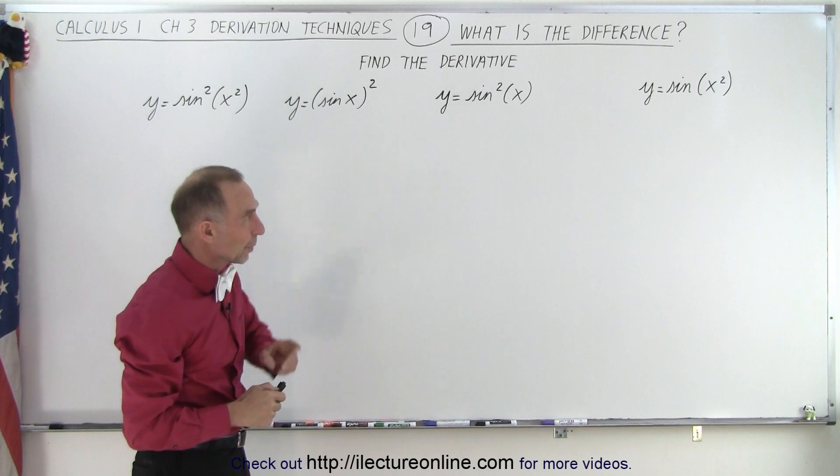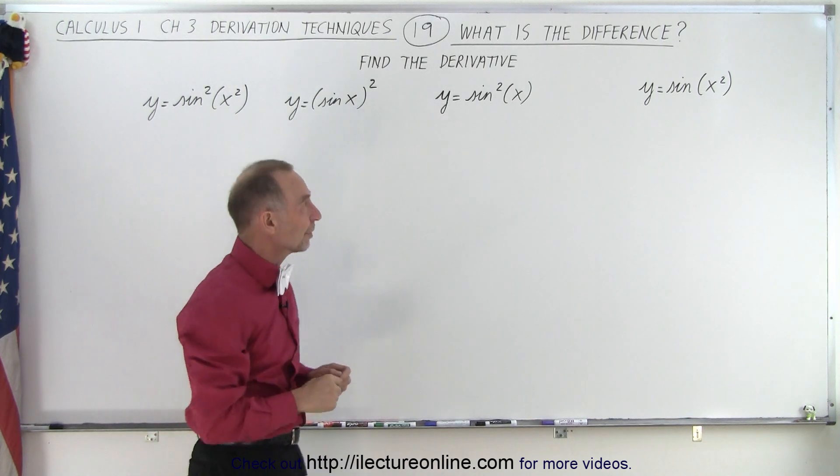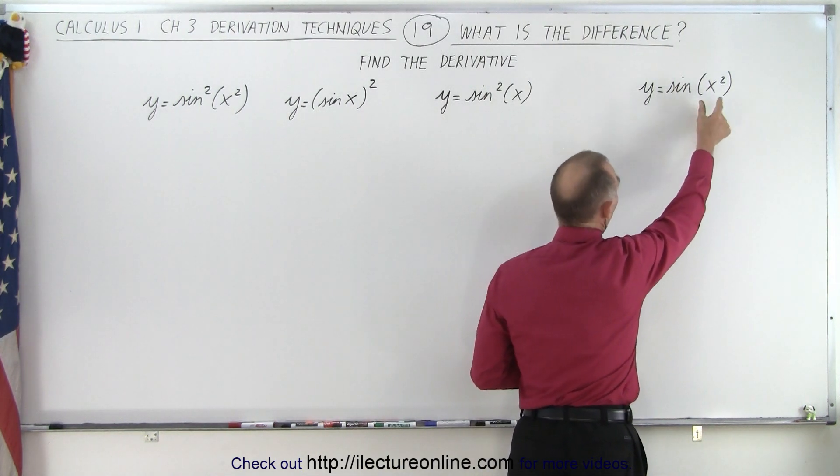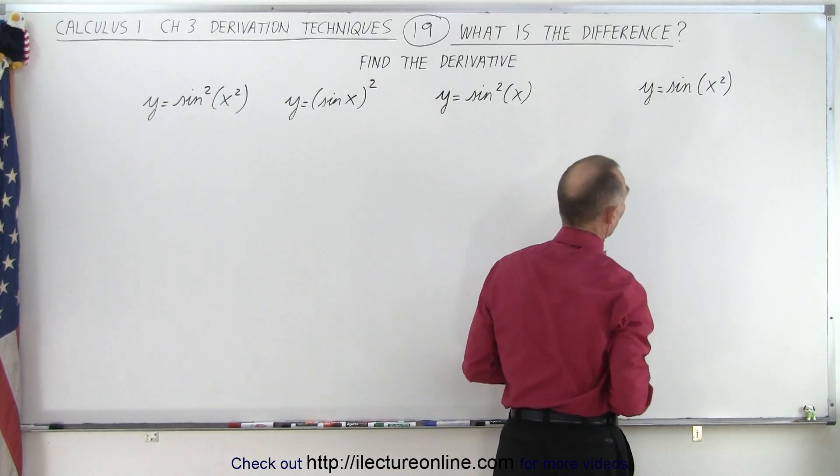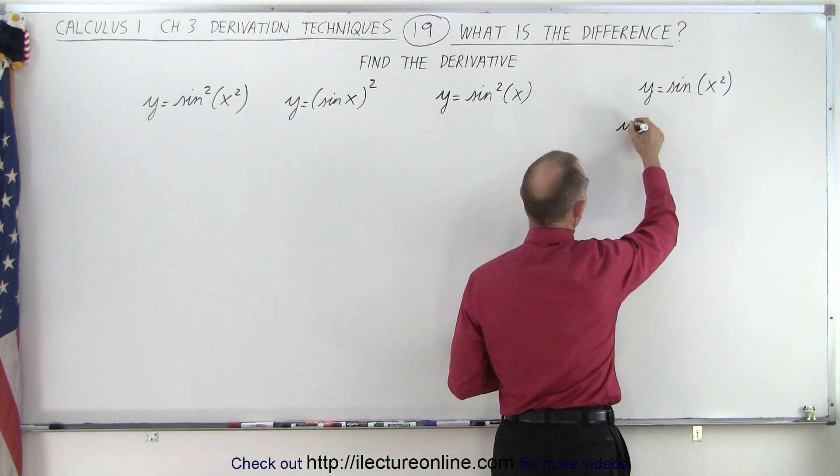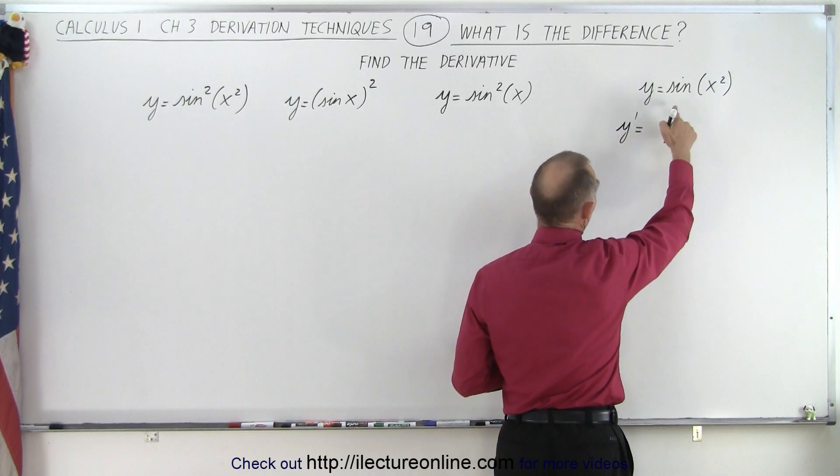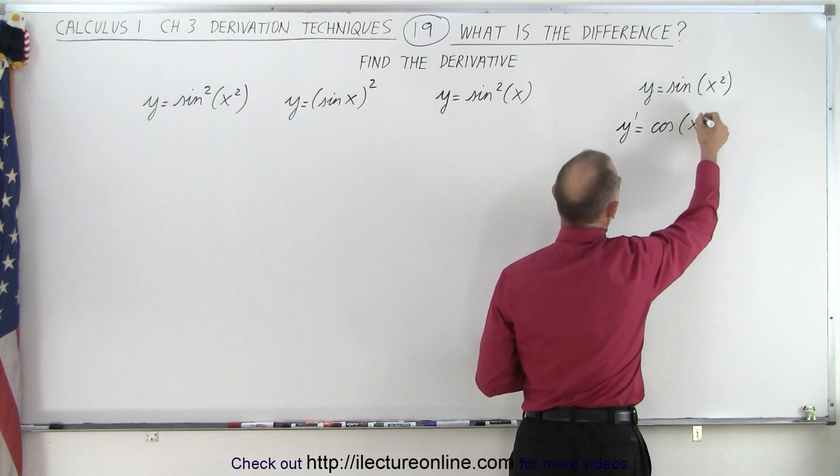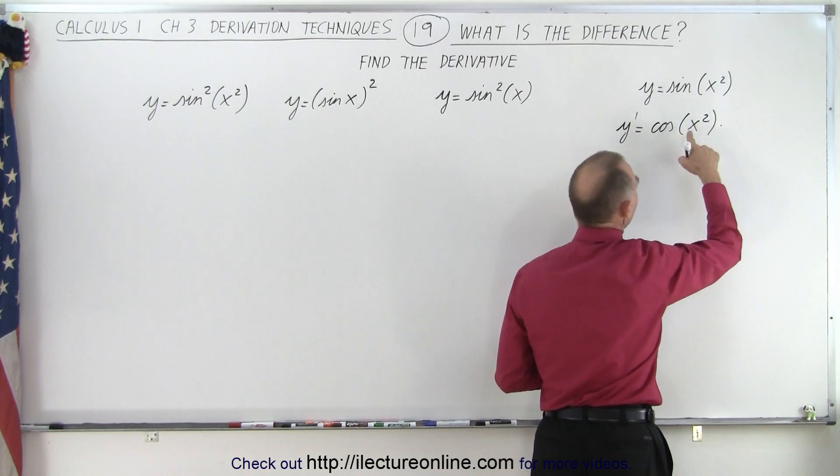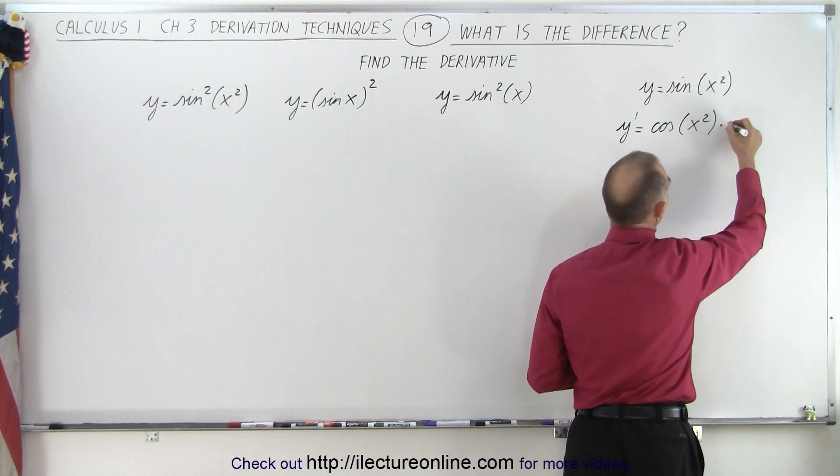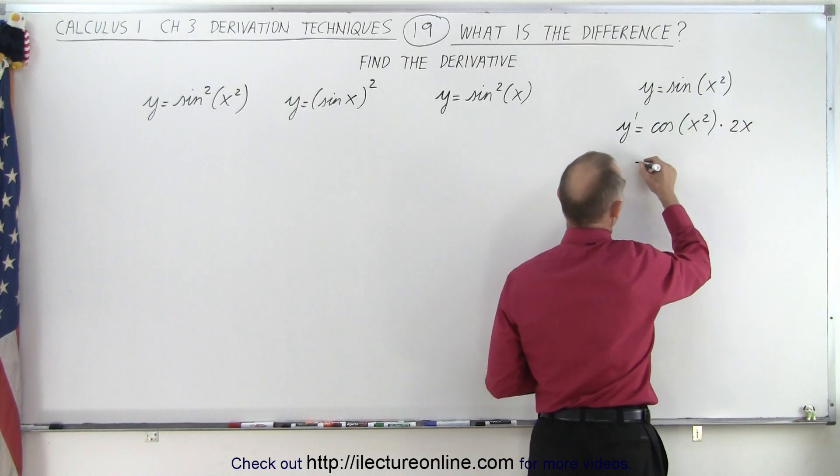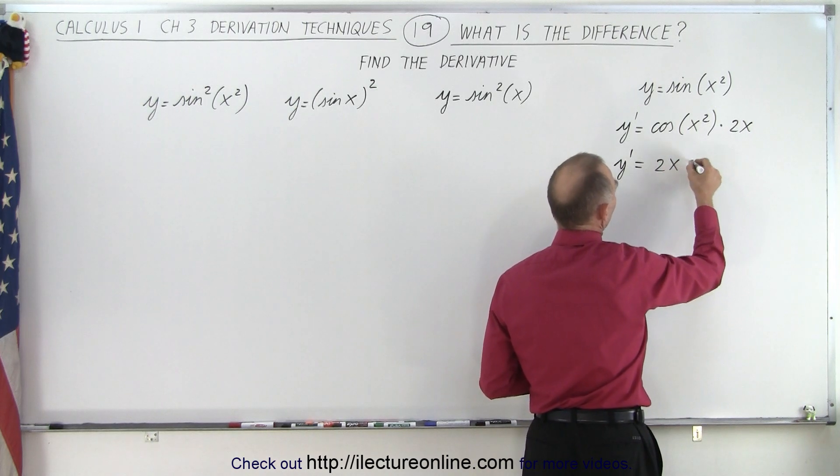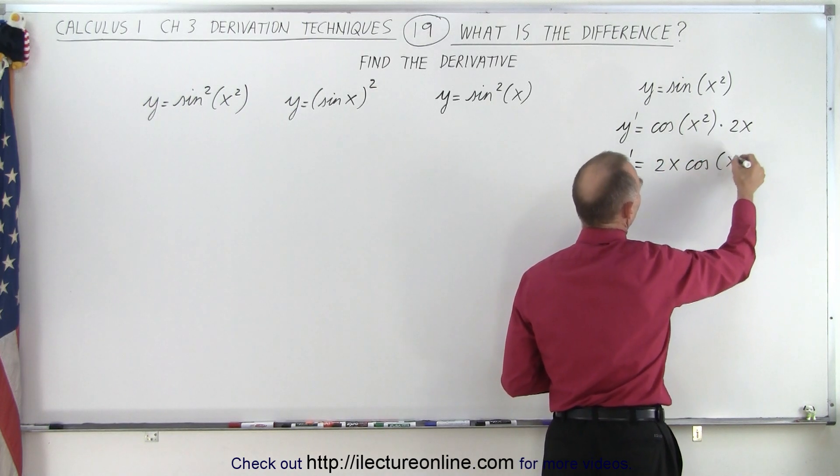All right, so let's do that one again. That's kind of like we did in a video a few videos ago. So here we simply have y equals the sine of some angle called x squared. So then when we find the derivative, y prime, well, the derivative of the sine is the cosine of x squared times the derivative of the angle x squared, so it's times 2x. And so this then comes out to be y prime equals 2x times the cosine of x squared.